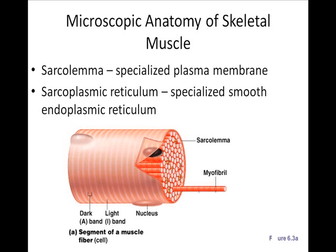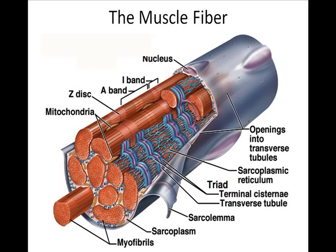There is also sarcoplasmic reticulum, which is really just smooth endoplasmic reticulum. The smooth endoplasmic reticulum, or sarcoplasmic reticulum, appears as little blue lines going throughout the cell. In muscle fibers, the sarcoplasmic reticulum holds calcium, and the calcium is really important to muscle contraction. You can see throughout, around all the myofibrils, the sarcoplasmic reticulum holding calcium.